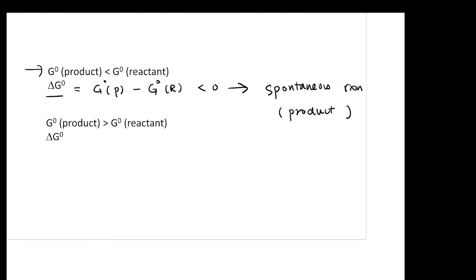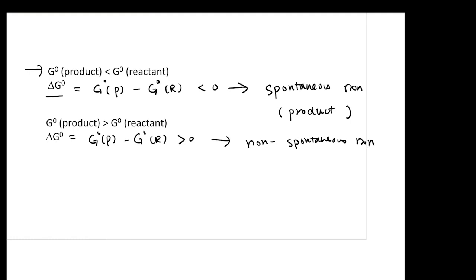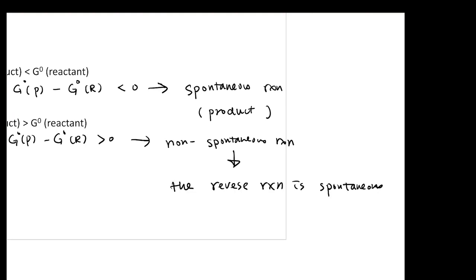On the other hand, if your G-naught product is larger than the G-naught of your reactant, your delta G-naught — which is G-naught product minus G-naught reactant — will be positive. Then it is a non-spontaneous reaction towards the product side. But what it means is actually the reverse reaction will be spontaneous. In other words, you are going to have more reactants.